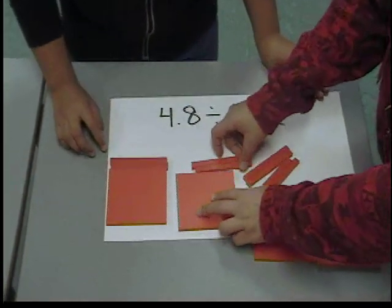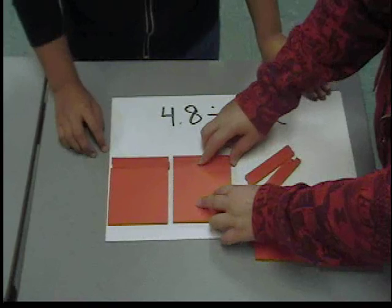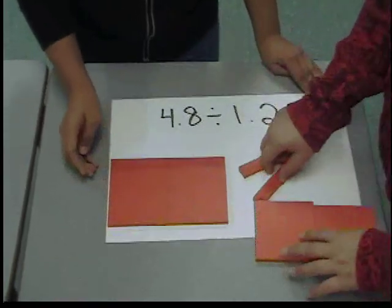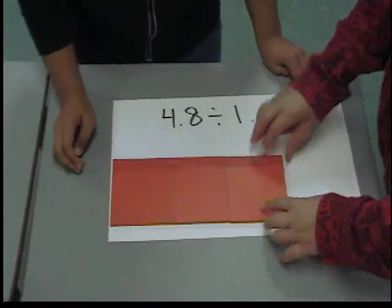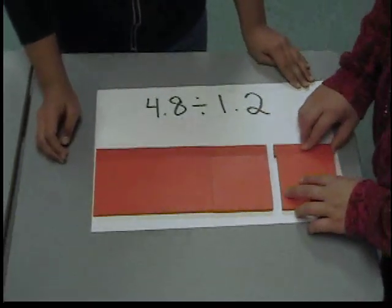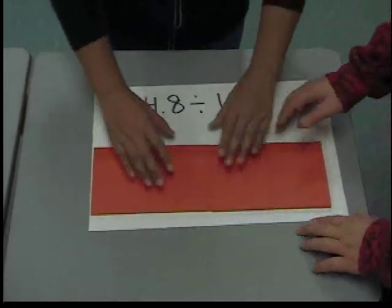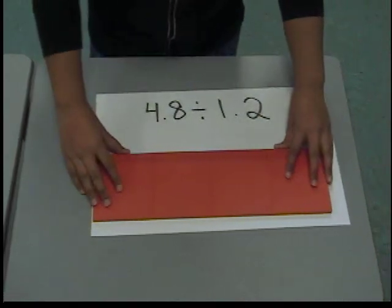Using our remaining base 10 blocks, we build the equation. We have to make sure all the base 10 blocks were used and that they're all evenly laid out, like in a rectangle.